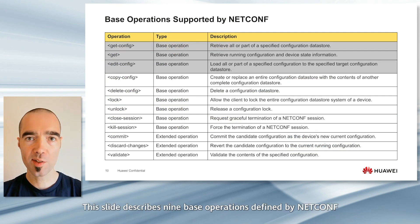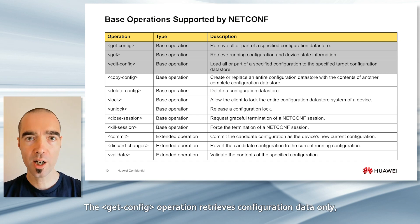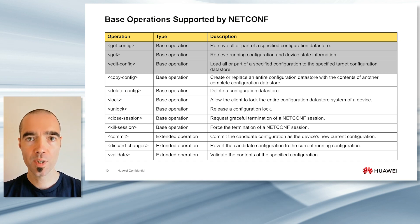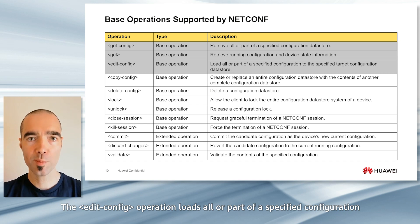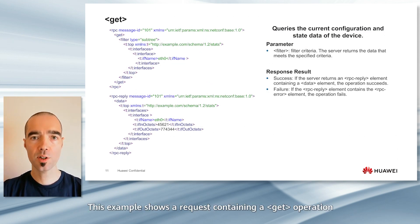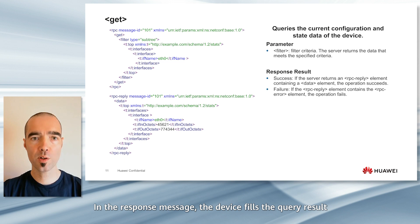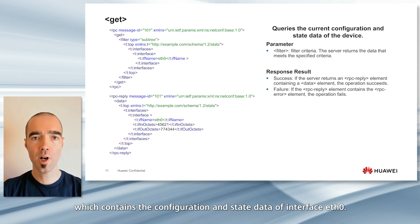This slide describes nine base operations defined by NETCONF and three extended operations. This course focuses only on the most widely used three operations highlighted in grey. The GetConfig operation retrieves configuration data only, while the Get operation retrieves configuration and state data. The EditConfig operation loads all or part of a specified configuration to the specified target configuration. This example shows a request containing a Get operation and the corresponding response. The request contains a filter criterion defined to query the configuration and state data of interface ETH0. In the response message, the device fills the query result meeting the filtering conditions in the data node, which contains the configuration and state data of interface ETH0.